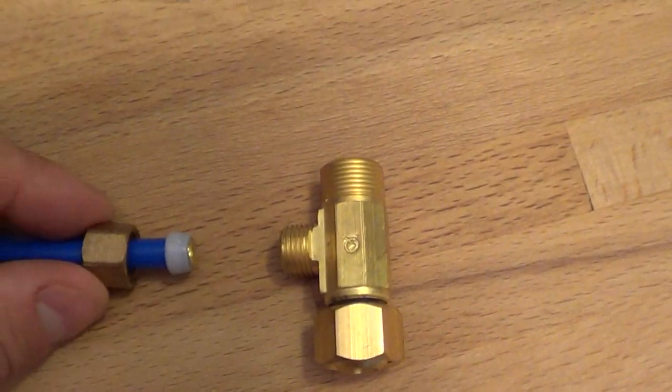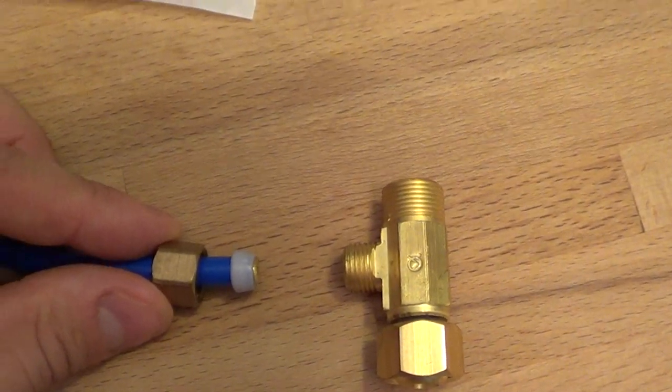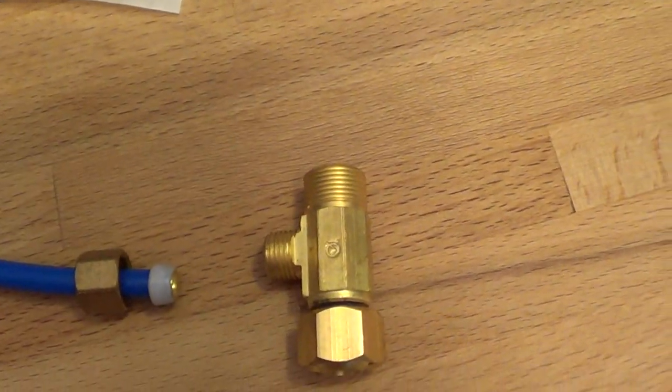And then coming off to the side is going to be your T, and that goes to your three-stage carbon filter.